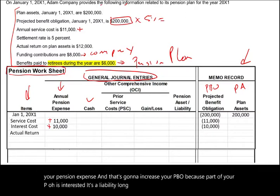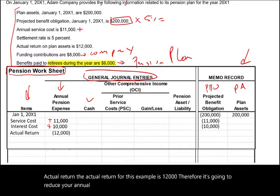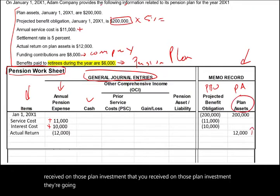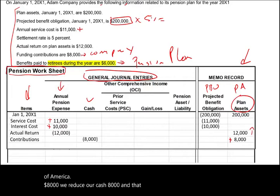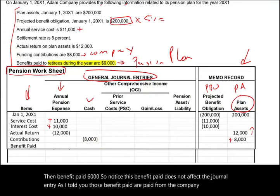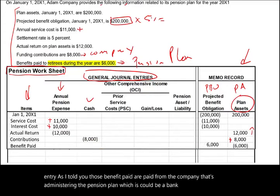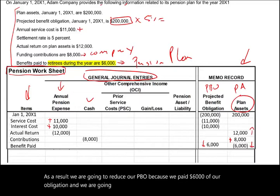Actual return: for this example it's $12,000, so it reduces your annual pension expense because the dividends and interest received on those plan investments increase your plan assets and reduce your interest expense. Contribution: the company wrote a check to the plan assets — $8,000. We reduce cash by $8,000 and that $8,000 increases the plan assets. Then benefit paid is $6,000. Notice this benefit paid does not affect the journal entry — it's paid from the pension plan administrator such as a bank. We reduce the PBO by $6,000 and also reduce plan assets by $6,000.